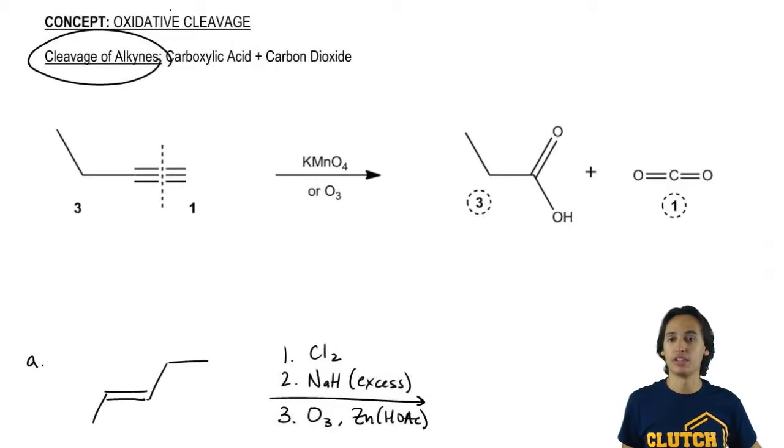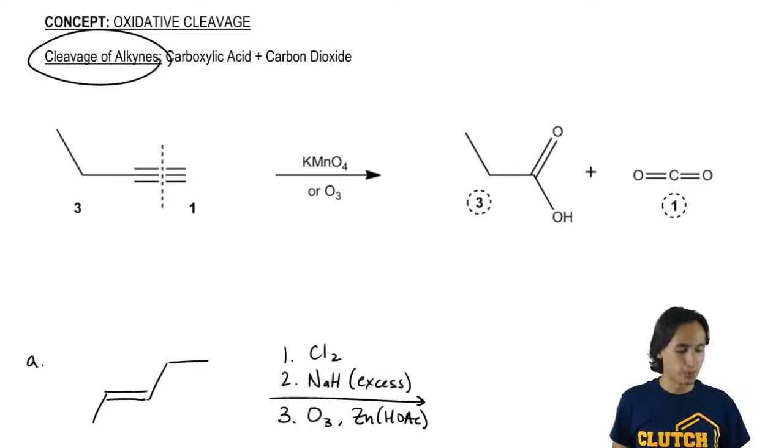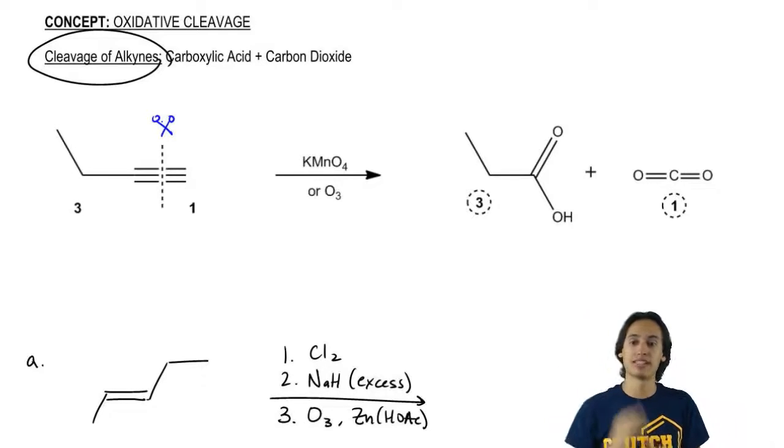When you have a cleavage of an alkyne, what that means is that you're basically taking that alkyne and you're splitting it in two. I'm going to use the analogy of scissors, so you're taking these scissors and you're just cutting it right down the middle of that triple bond.